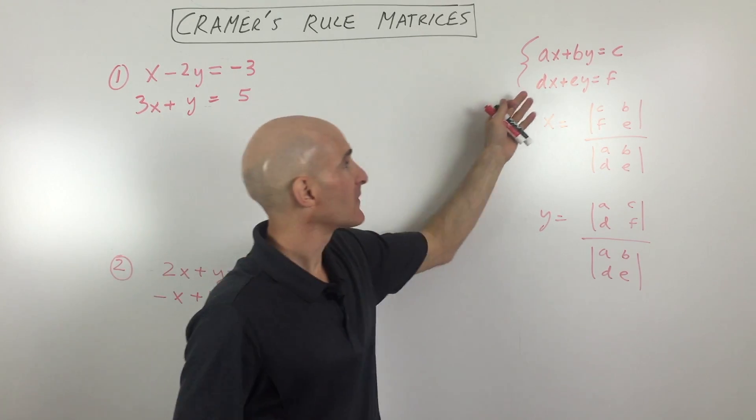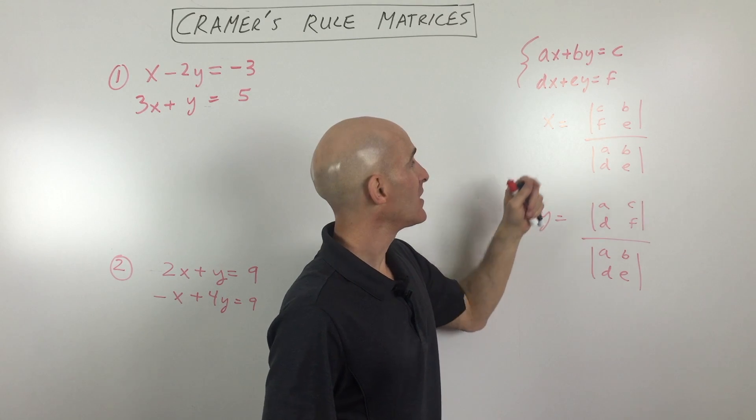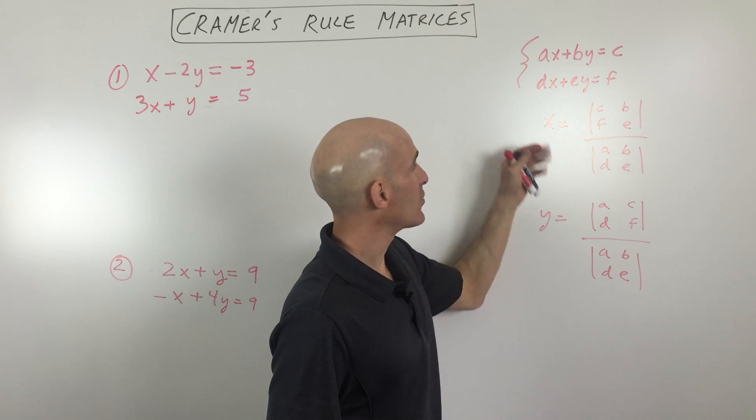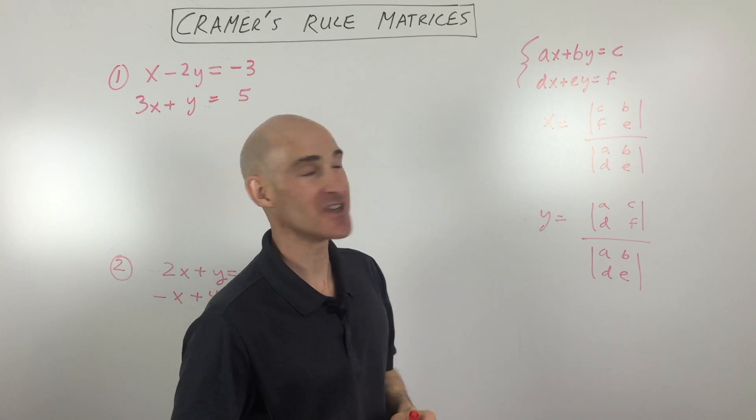So what Cramer's Rule does for us is it allows us to use determinants to solve a system of equations. So here's the formula over here. I've just written this in a generic form, but I'll explain how to do it. It's very easy.